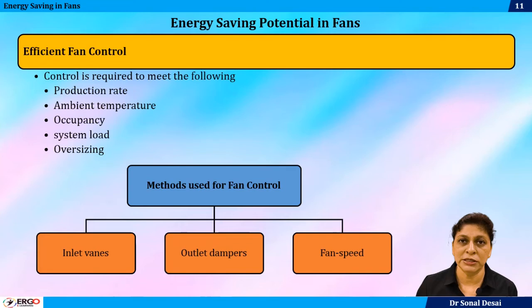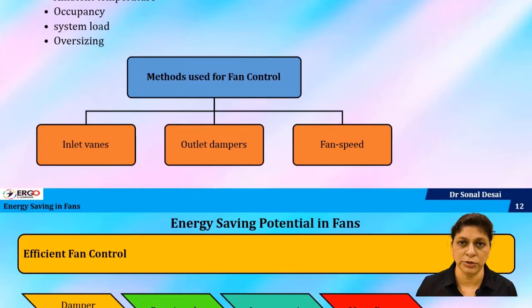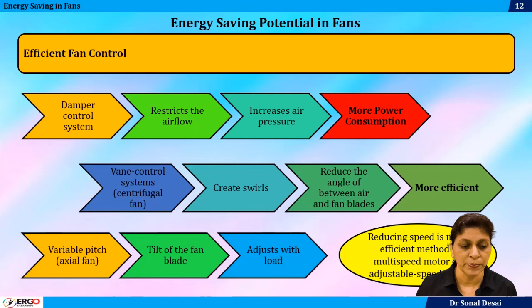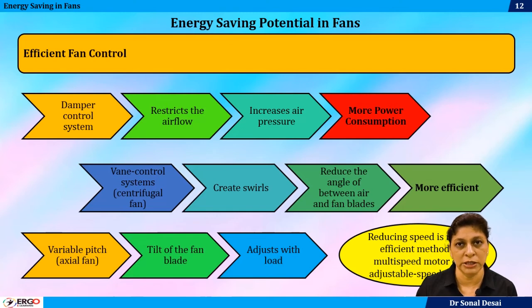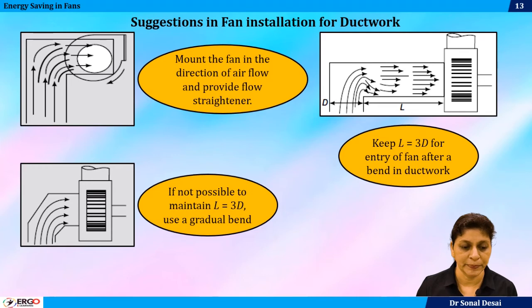First and foremost is efficient fan control. Whenever we need to vary the flow rate of a fan, we normally use resistance or a damper. How this is harmful and ultimately creates more power consumption is discussed here. All possible methods of fan control — damper control, vane control, or variable speed control — are discussed, and how variable speed control is better than others is explained with the affinity rule.